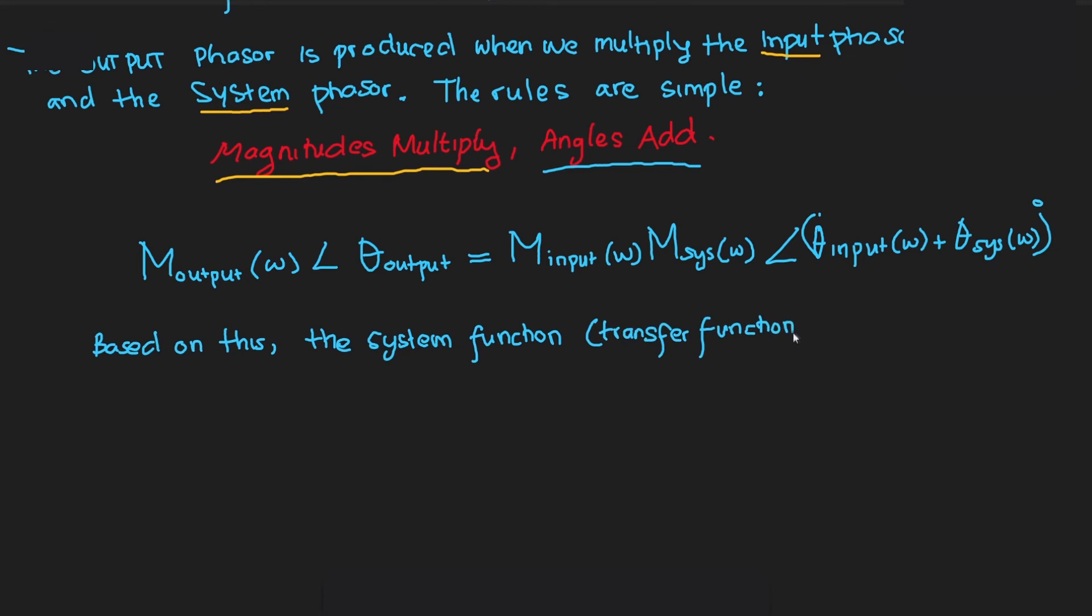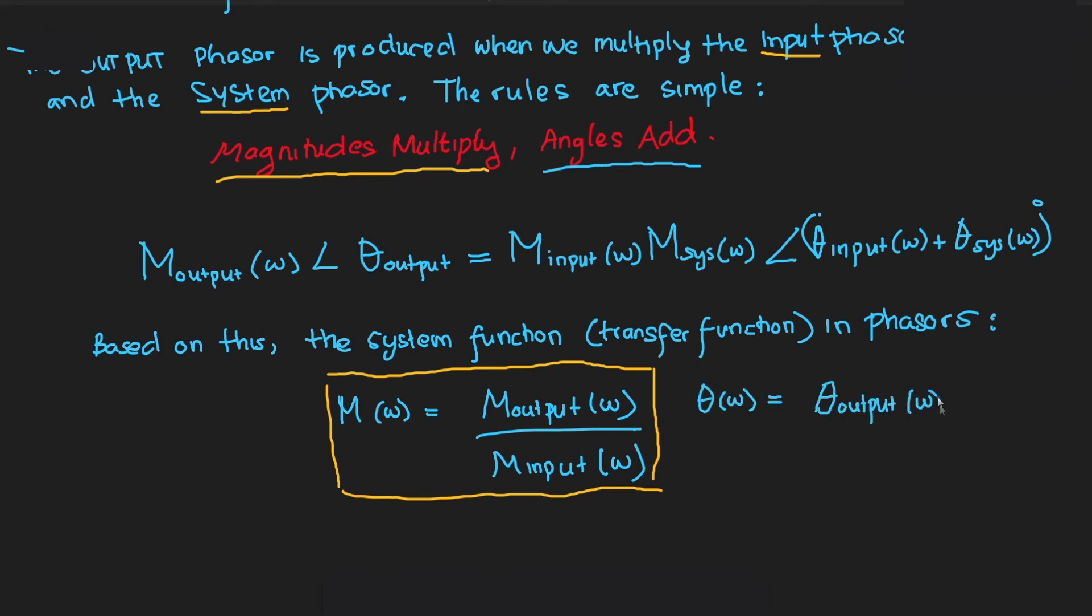Based on this, the system function in phasors or complex numbers will be M_system = M_output / M_input, and the phase angle of the system is θ_system = θ_output - θ_input.